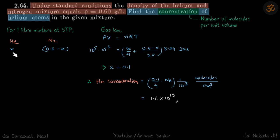So n, total number of moles will be X upon molecular mass of Helium plus 0.6 minus X upon molecular mass of Nitrogen into RT.